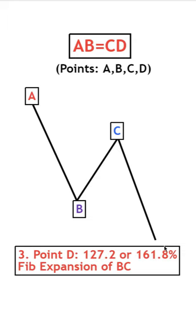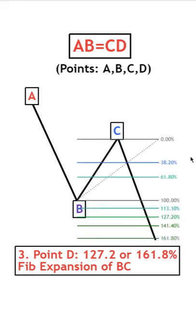And now to find the last point in point D, we'll need a Fibonacci expansion from move B to C in the direction of point D where it needs to touch the 161.8 level if you had a 61.8 retracement for point C. But if point C touched the 78.6 level, then point D only needs to touch 127.2.